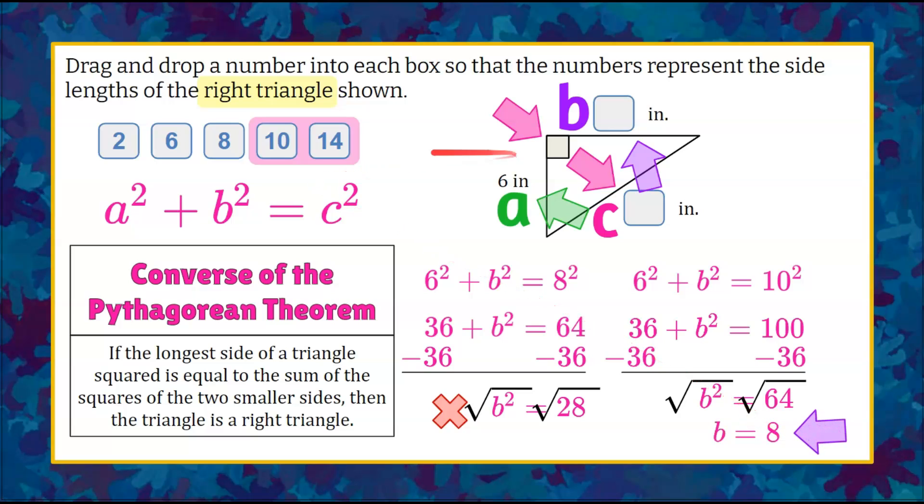So now we can see that we have that choice 8. And we can replace side B, that leg, could be 8. And if we go back, we put in 10 for our value C, our hypotenuse. So we can drag 10 over to there.